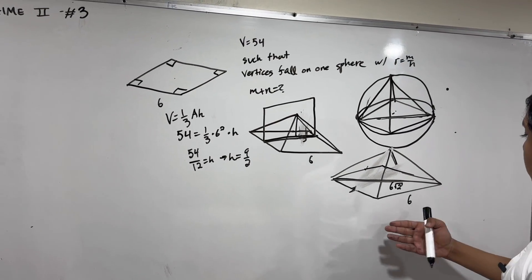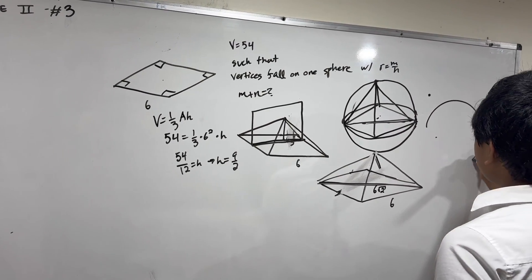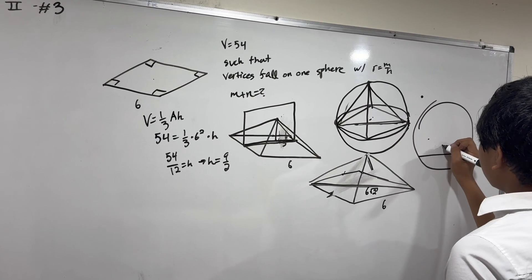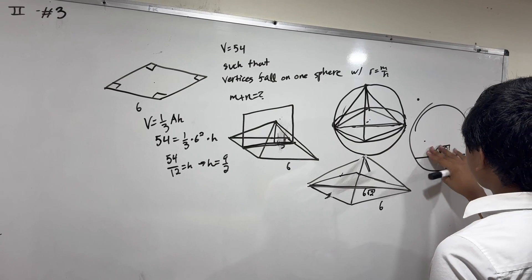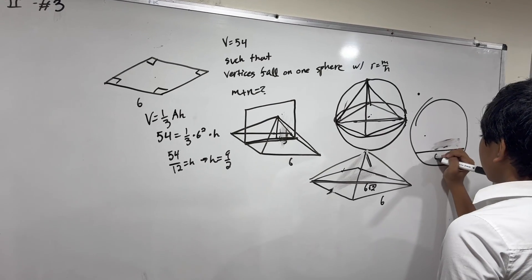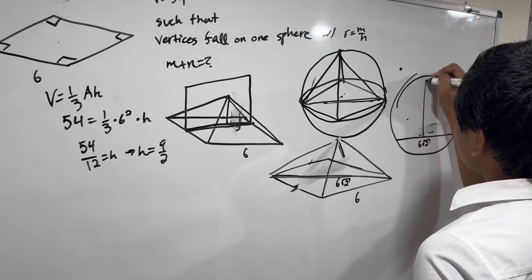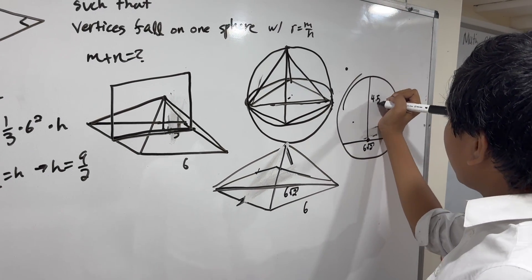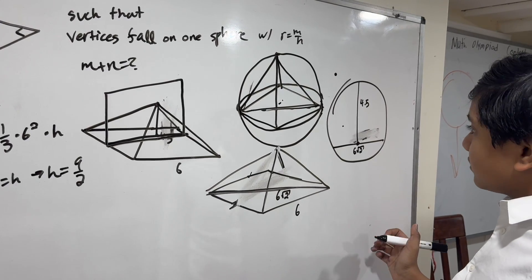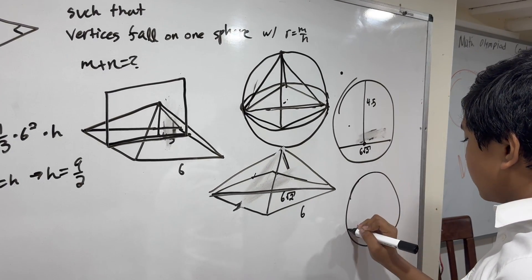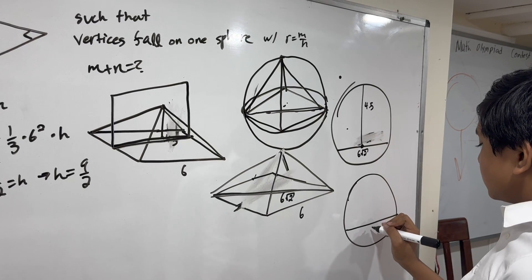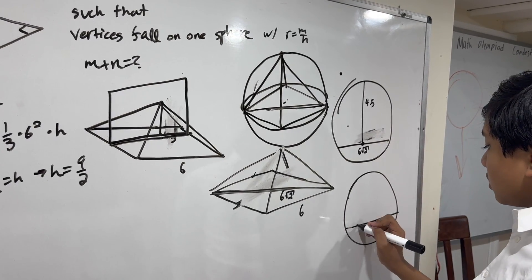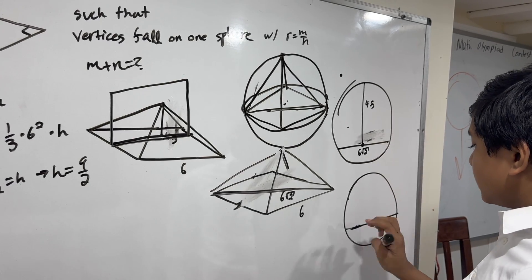This line obviously has length 6√2 because the square has side length 6. So now this is what a 2D cross section would look like: this would be 6√2 and we would have a height, this is a midpoint, of 4.5. Now that is definitely not to scale, so we can definitely draw something better.